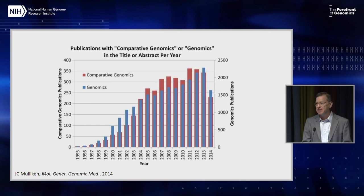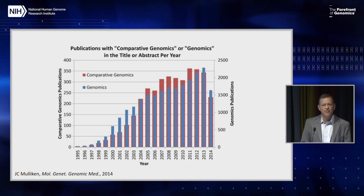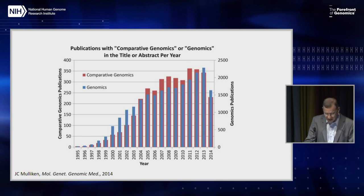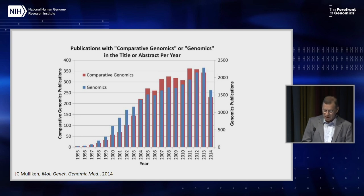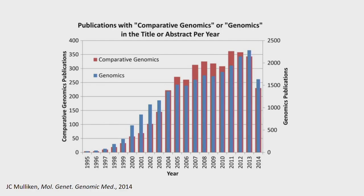The field of comparative genomics has absolutely exploded. The most recent publication to summarize this was Mulliken in 2004. Since 2014, we now see over 4,000 titles and abstracts with the word "genomics" and more than 650 titles and abstracts with the words "comparative genomics." In the last six years, we have had more than a doubling of the scientific output in this discipline. This field is really expanding and bringing in many talented new investigators.